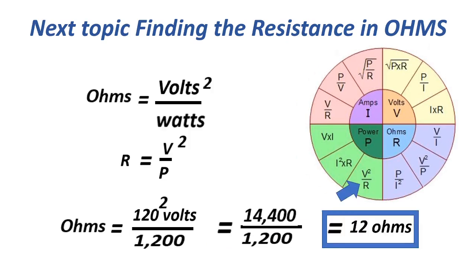The next resistance formula: ohms equals volts squared over watts, or R equals V squared over P, equals 120 squared over 1,200, equals 14,400 divided by 1,200, equals 12 ohms.